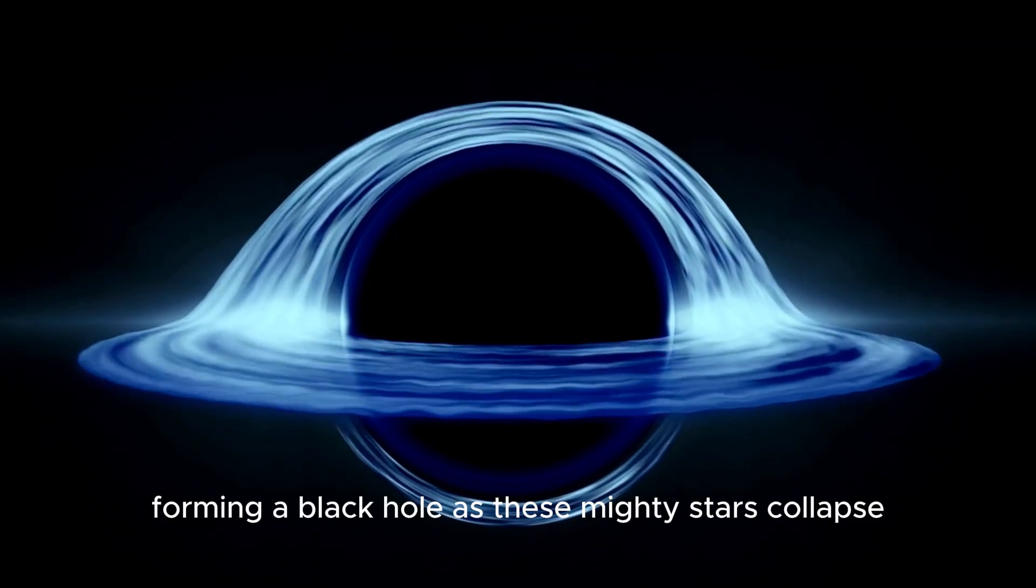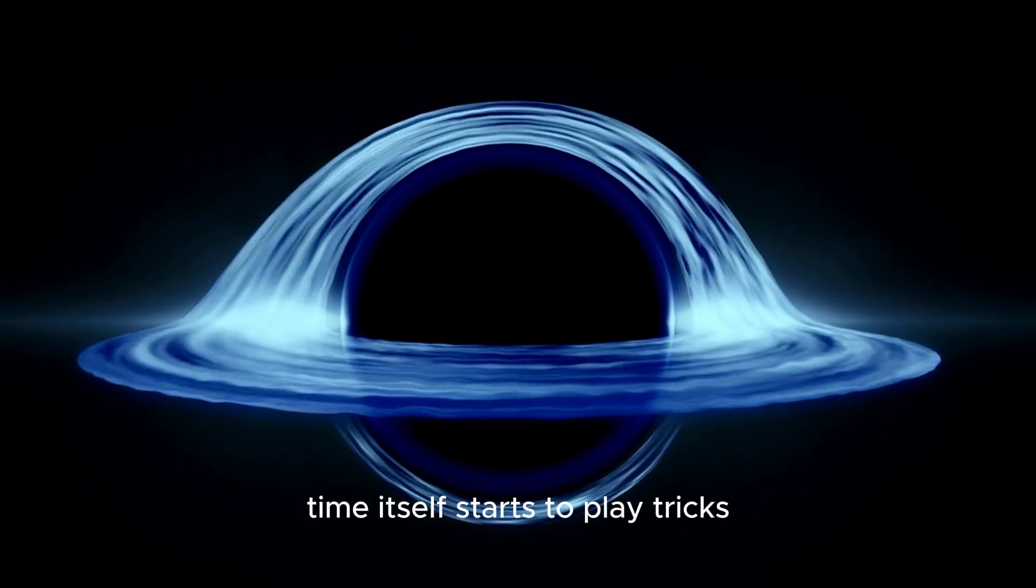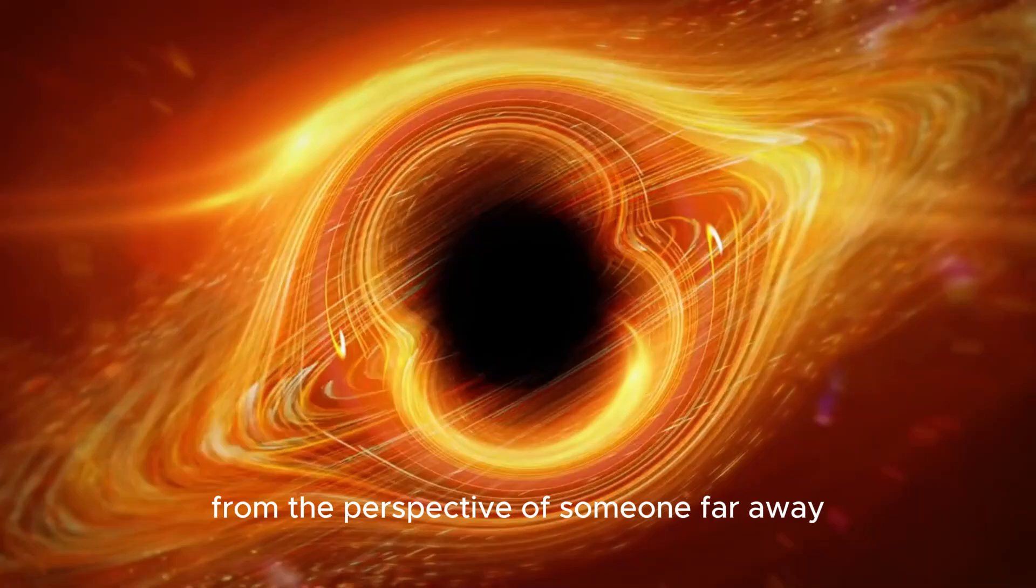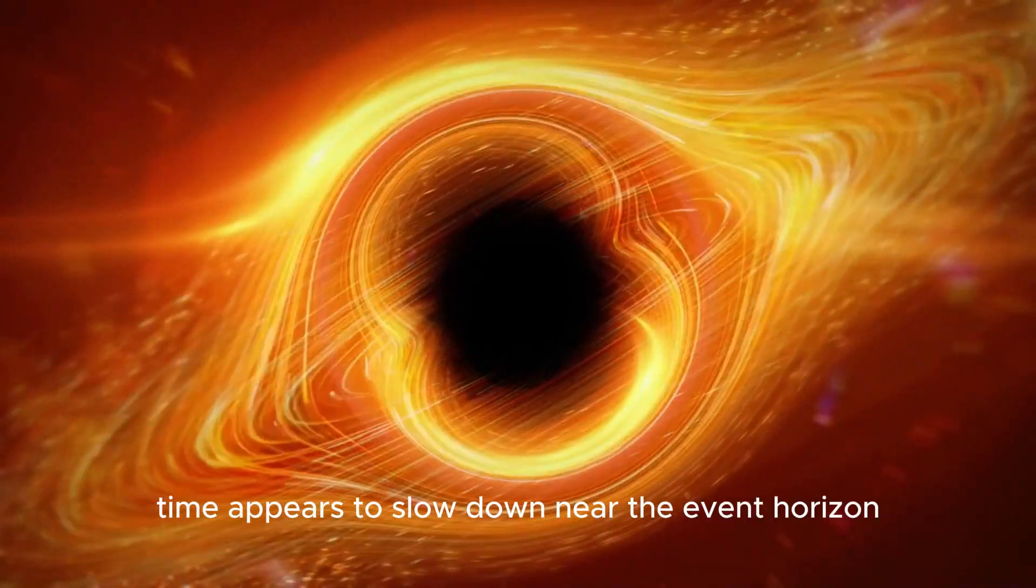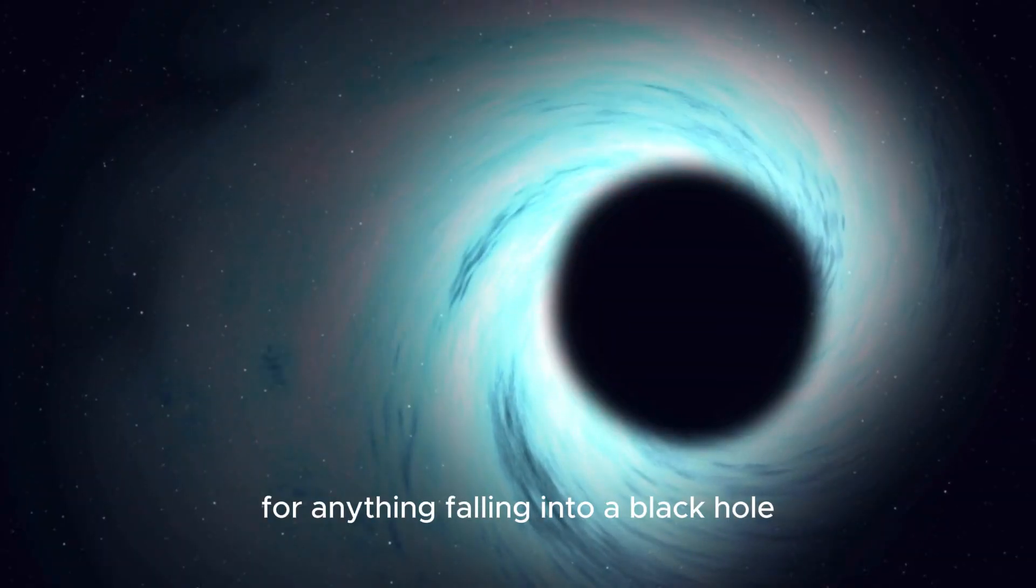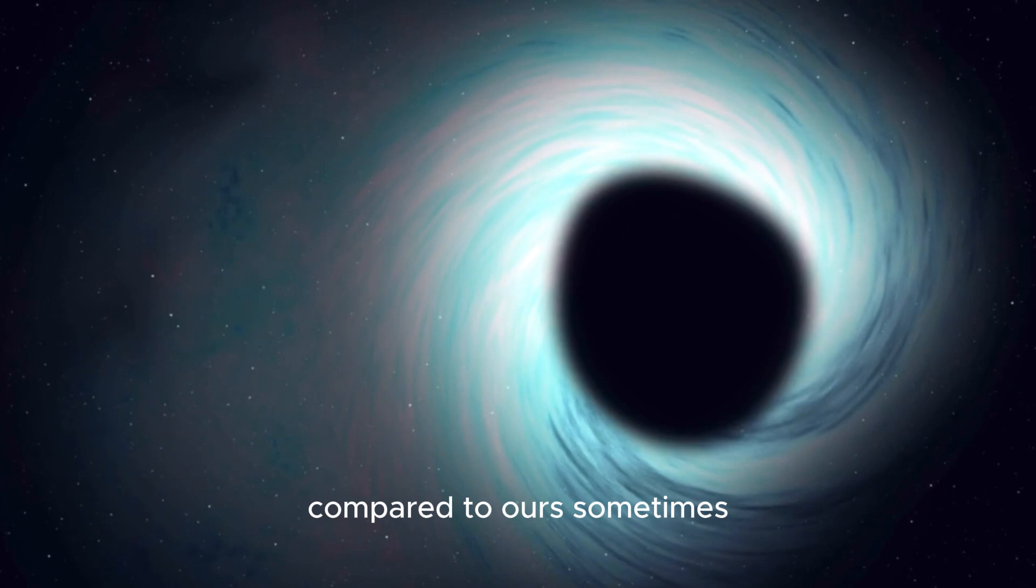As these mighty stars collapse, something strange occurs near their surfaces. Time itself starts to play tricks. From the perspective of someone far away, time appears to slow down near the event horizon, the point of no return for anything falling into a black hole. It's like the star's clock ticks at a different pace compared to ours.